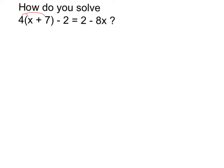As a first step, I'm going to distribute, and I get 4 times x is equal to 4x plus 4 times 7, which is 28. So 4x plus 28 minus 2 equals 2 minus 8x. The 28 and the minus 2, of course, I can simplify right away, and that's going to be a plus 26.